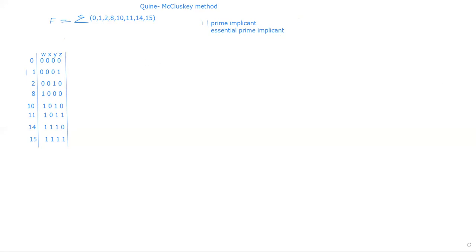As the next step, we have to form groups. What do we mean by group? You have to check the binary values and group them such that the first group will have no ones, the second group will consist of binary numbers which have only a single one, the third group will have binary numbers with only two ones, then three ones, and four ones — like that you have to group.